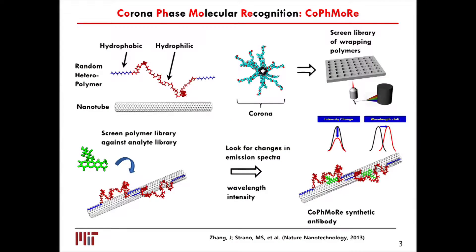But if you do the following empirical experiment: if you make a library of these polymers and a library of corona phases, and you do an experiment that actually shouldn't work — you screen that library against an analyte library — what you'll find are very exquisite cases of molecular recognition. We call that CoronaPhase Molecular Recognition. We're using a near-infrared fluorescent carbon nanotube nanoparticle. It fluoresces in the infrared, and we look for changes in its intensity and wavelength shift to indicate that a molecule has bound. Over the past four to five years, we have ample evidence this can be extended to a wide variety of molecular species.